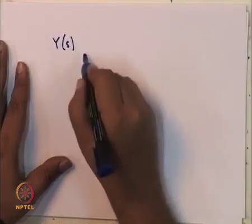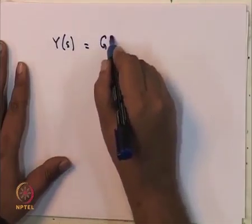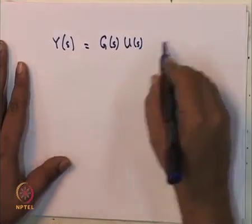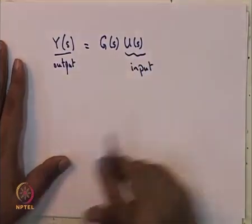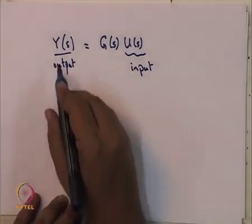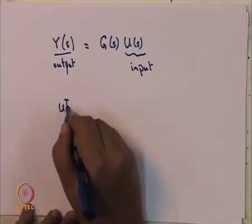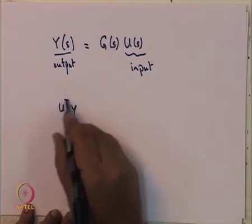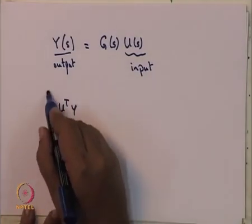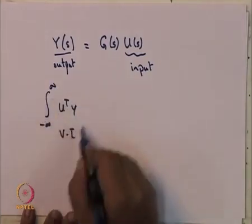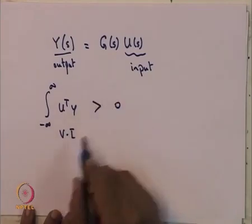Let me constrain myself to a single input single output case. The single input single output situation is given using a transfer function as y = G·u, where y is the output and u is the input. Earlier we said that u^T y — which in the case of an electrical circuit is V·i — is exactly u^T y. We say that the integral from minus infinity to plus infinity of u^T y should be greater than 0 for the system to be passive.